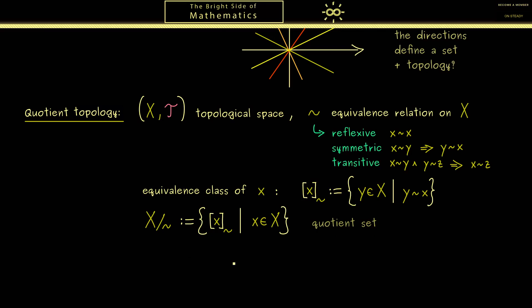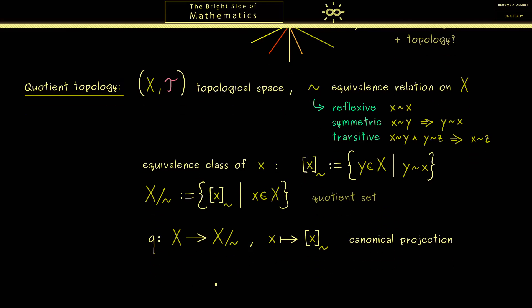However, you already know we are not interested in the set itself but in the set together with the topology. And now the question remains, how do we define a new topology here? Indeed in order to do this we need the so-called quotient map q that sends the set X to the quotient set X modulo tilde. The definition of this map is very simple. It just takes an element x and sends it to the corresponding equivalence class. Therefore this map is often called the canonical projection. Here one important thing you should note is that this is indeed a surjective map.